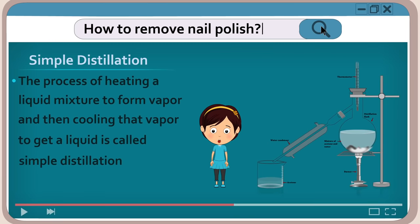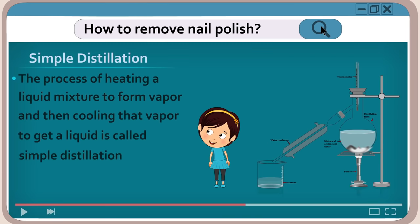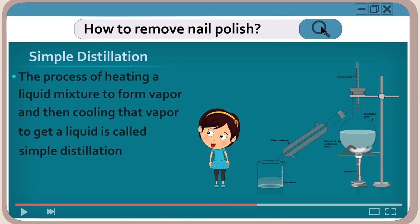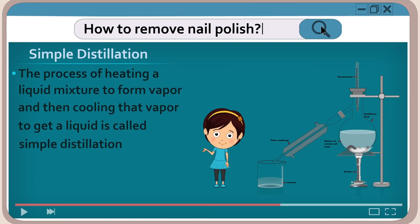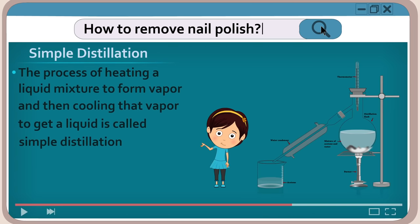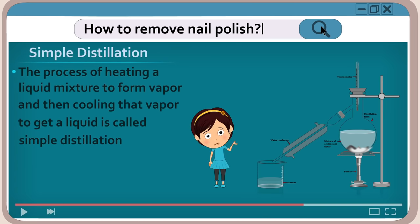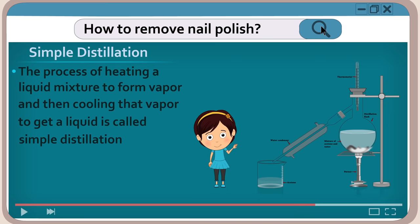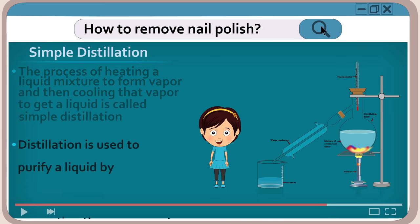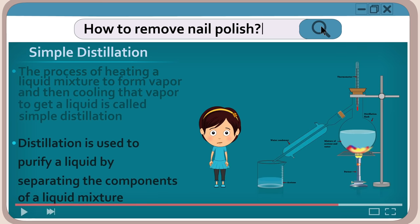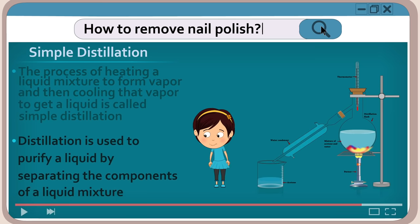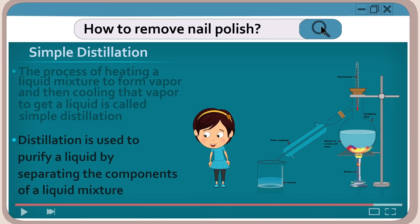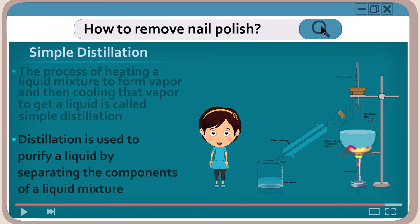The process of heating a liquid mixture to form vapor and then cooling that vapor to get a liquid is called simple distillation. Distillation is used to purify a liquid by separating the components of a liquid mixture.